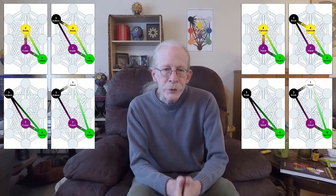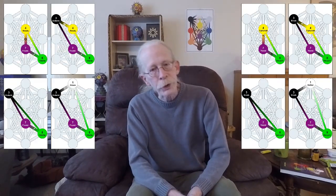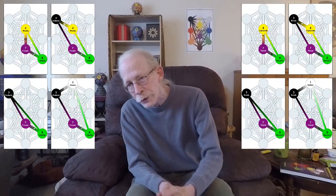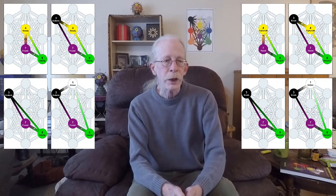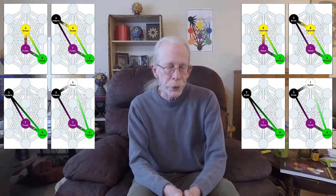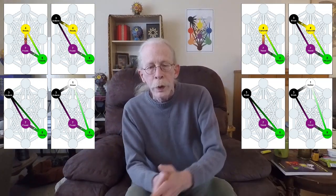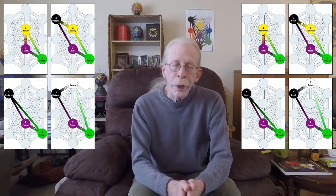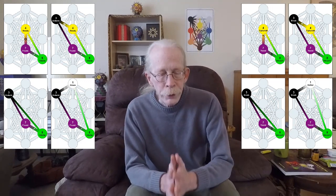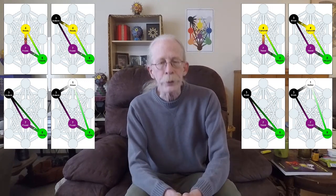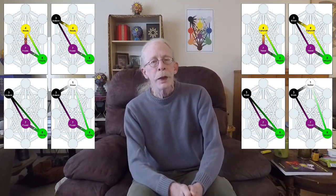Today I'm going to talk about the last four gates of Samek, which are also the last four gates of Metzach. We'll go through these very quickly. We have two triangles and two quadrangles.